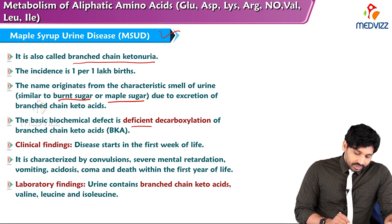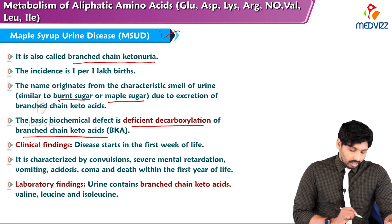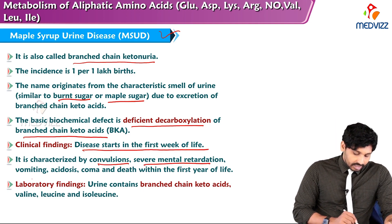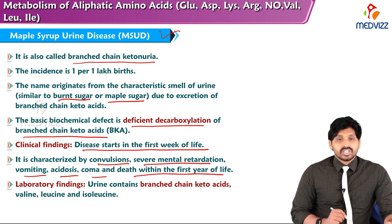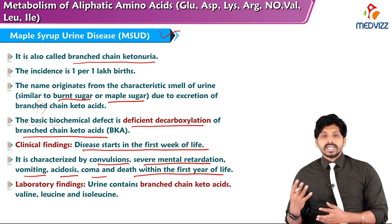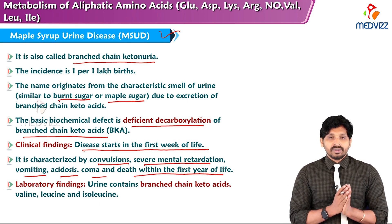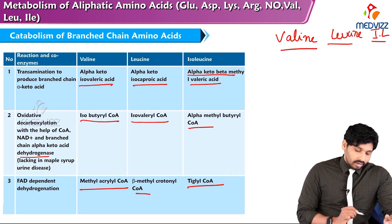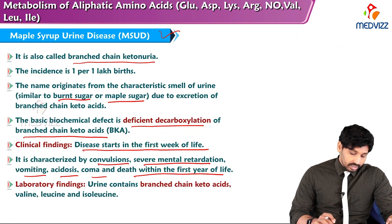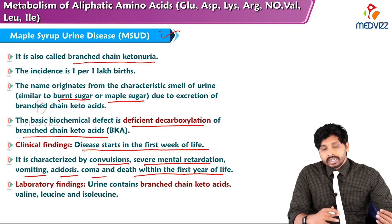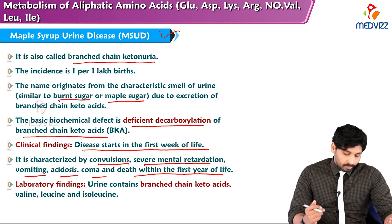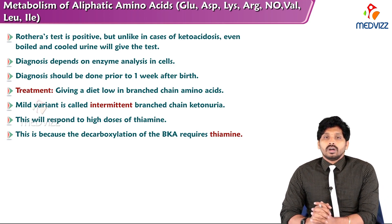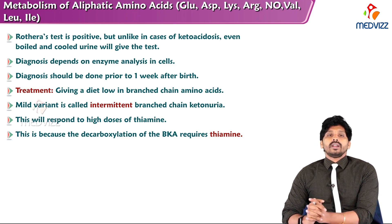The basic biochemical defect in MSUD is deficient decarboxylation of branched chain keto acids. The disease starts in the first week of life and is characterized by convulsions, severe mental retardation, vomiting, acidosis, coma, and death within the first year of life. Laboratory findings show urine contains branched chain keto acids, valine, leucine, and isoleucine. The main deficient enzyme is alpha-keto acid dehydrogenase, which is involved in decarboxylation. If there is no decarboxylation, these cannot be further converted to their dehydrogenated products. Rothera's test is positive, but unlike in ketoacidosis, even boiled and cooled urine will give a positive test.